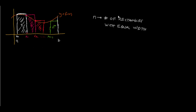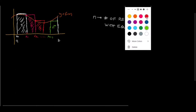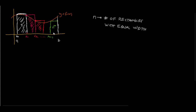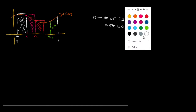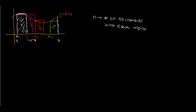Let's designate the width of each rectangle as delta x — that's how we do it in calculus when approximating with small parts. So how do we get delta x? We take the last limit, b, subtract the first limit, a, and divide by the number of rectangles. So delta x equals b minus a divided by n.